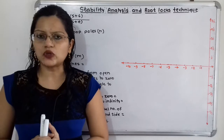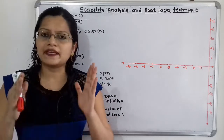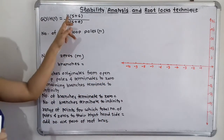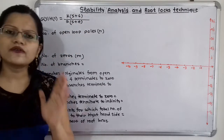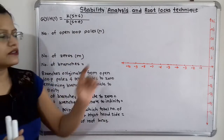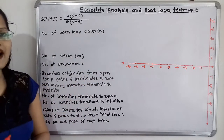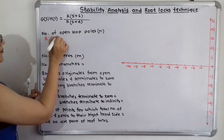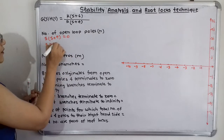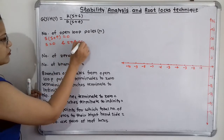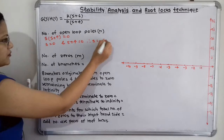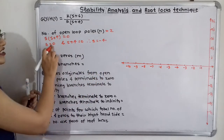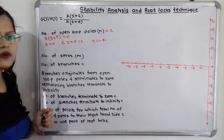Let us first sketch the root locus. The first step is to find out the number of poles and number of zeros. If we observe the given transfer function K(s+6) divided by s(s+4), to find the number of open loop poles N, we equate the denominator to zero. So s=0 and s+4=0, therefore s=−4. There are two roots, so the number of open loop poles N is equal to 2, at s=0 and s=−4.